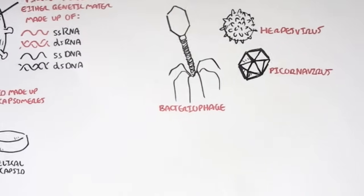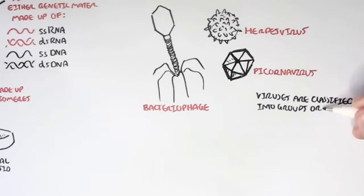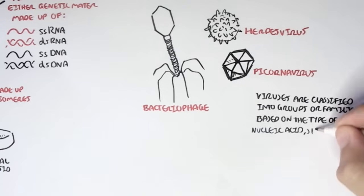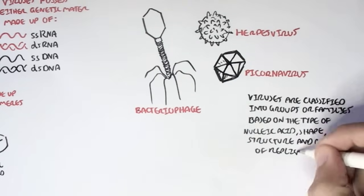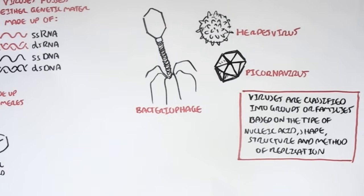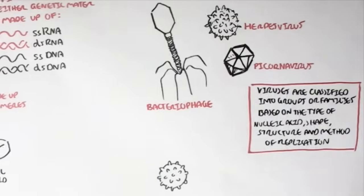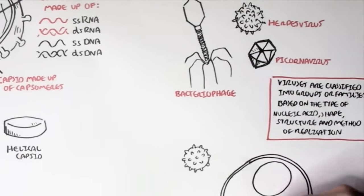Viruses are classified into groups or families based on the type of nucleic acid they contain, their structure, their shape and their method of replication. So based on all these classifications, there are a lot of different groups of viruses as well as subgroups.